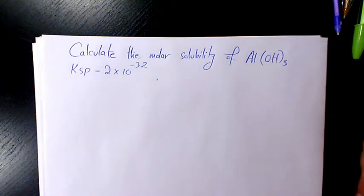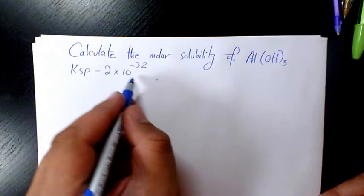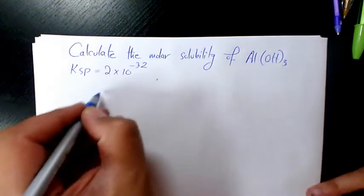What's up guys, this is Massey, welcome to another video. In this video I want to show you how to calculate the molar solubility of Al(OH)3 when the KSP is 2 times 10 to the power of negative 32.